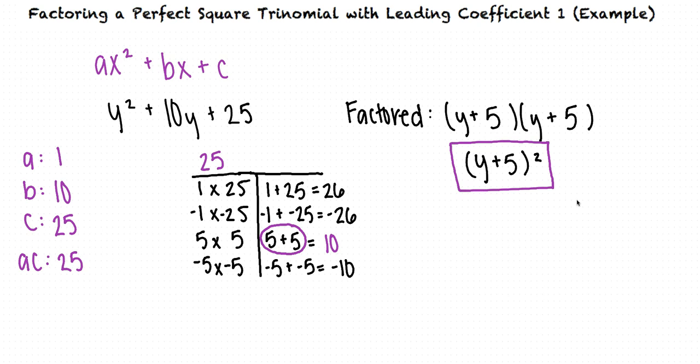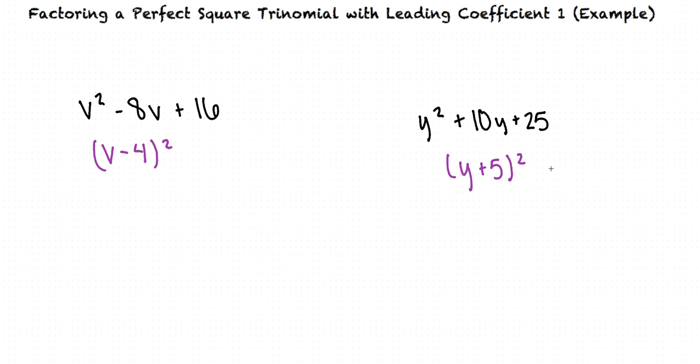Now, if we look at our factored forms for both example 1 and example 2, we notice that the numbers within the factored quantities are equal to the square root of our c value from the original polynomial. Also, the sign is the same as the sign of the b value from the original polynomial.